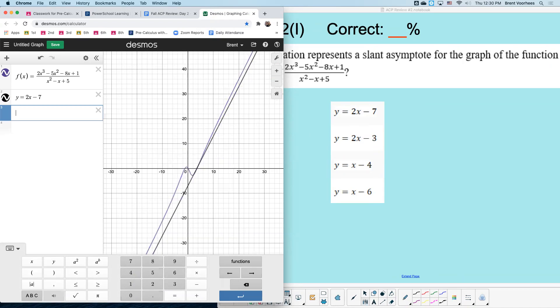So there's answer choice A. Here is answer choice B. Here is answer choice C, and here is answer choice D.